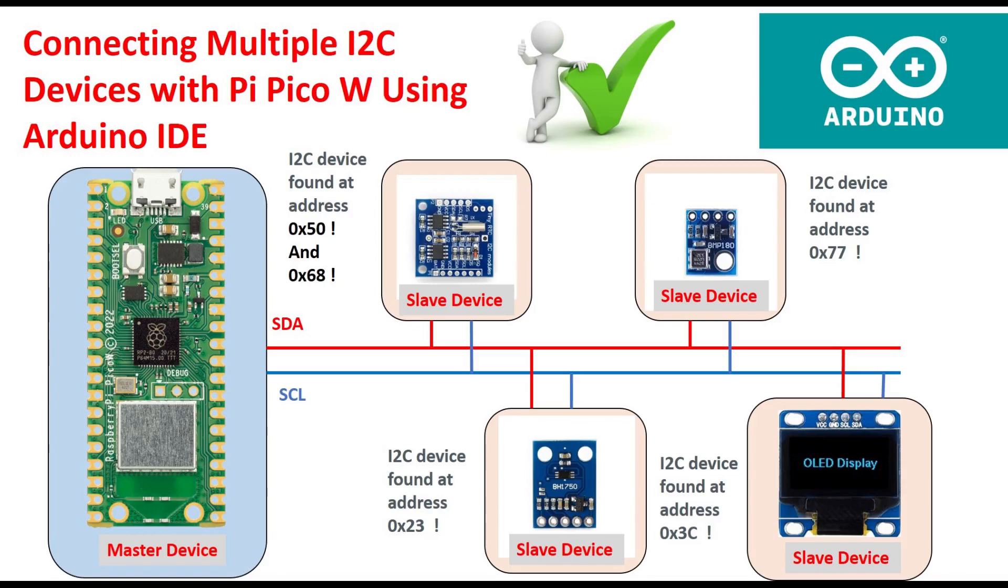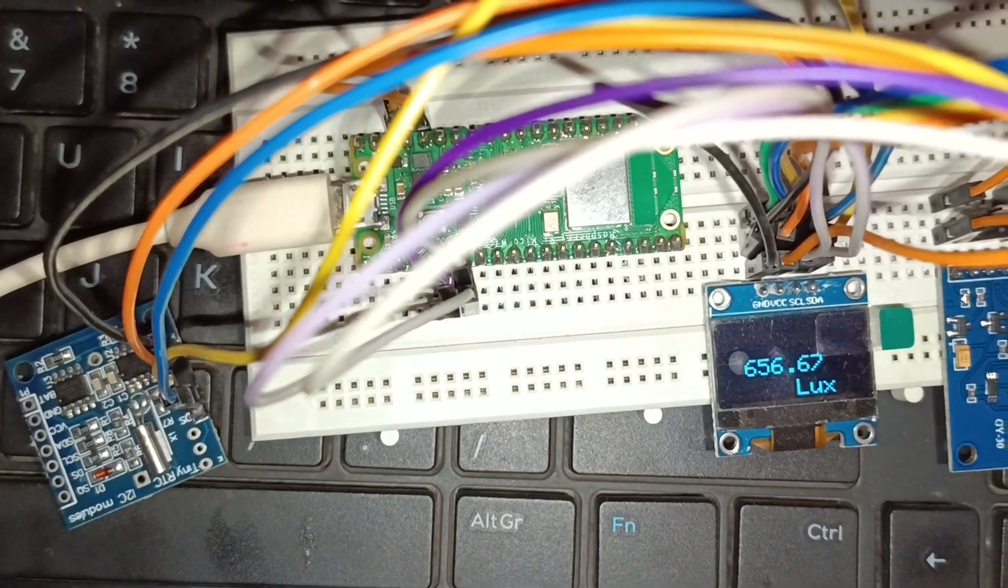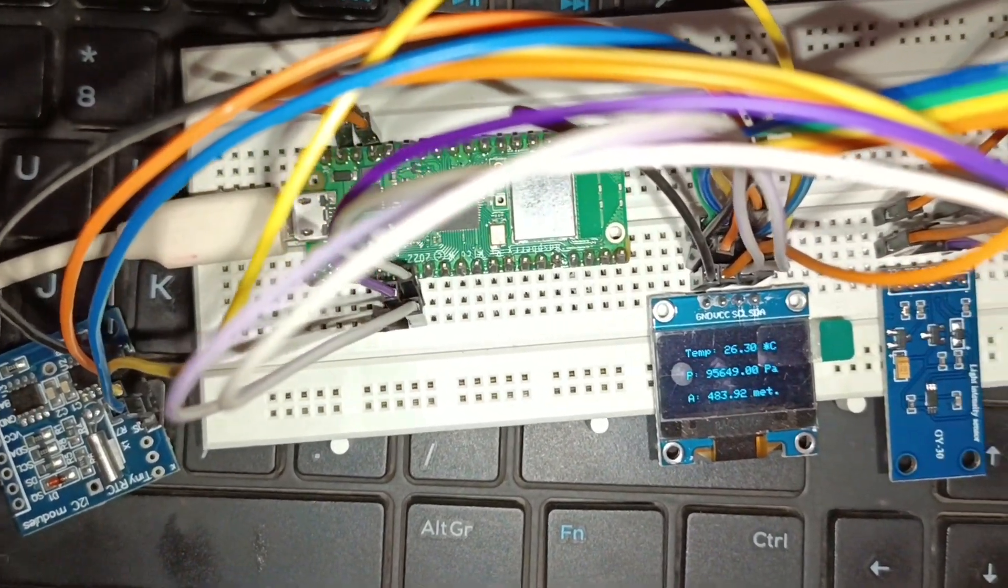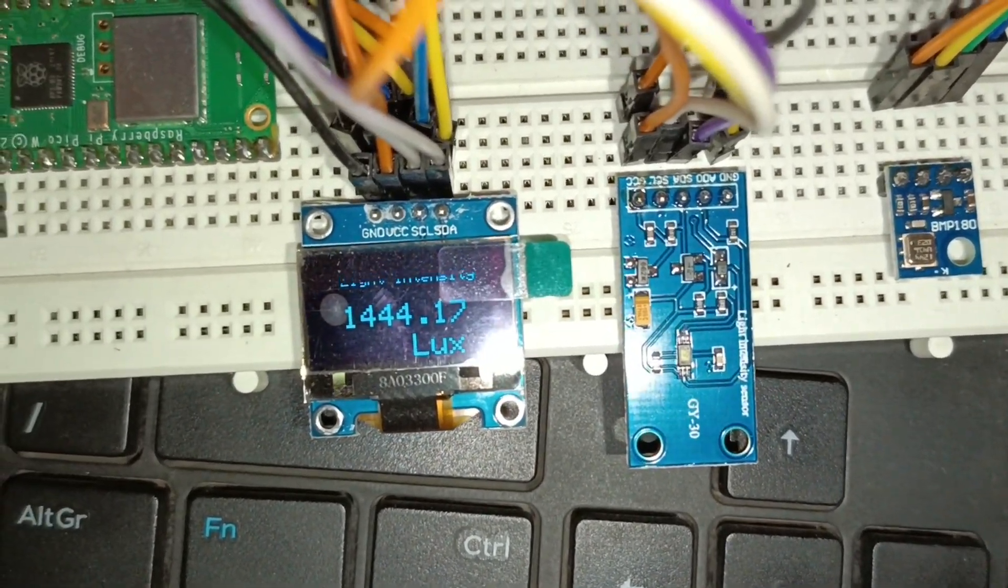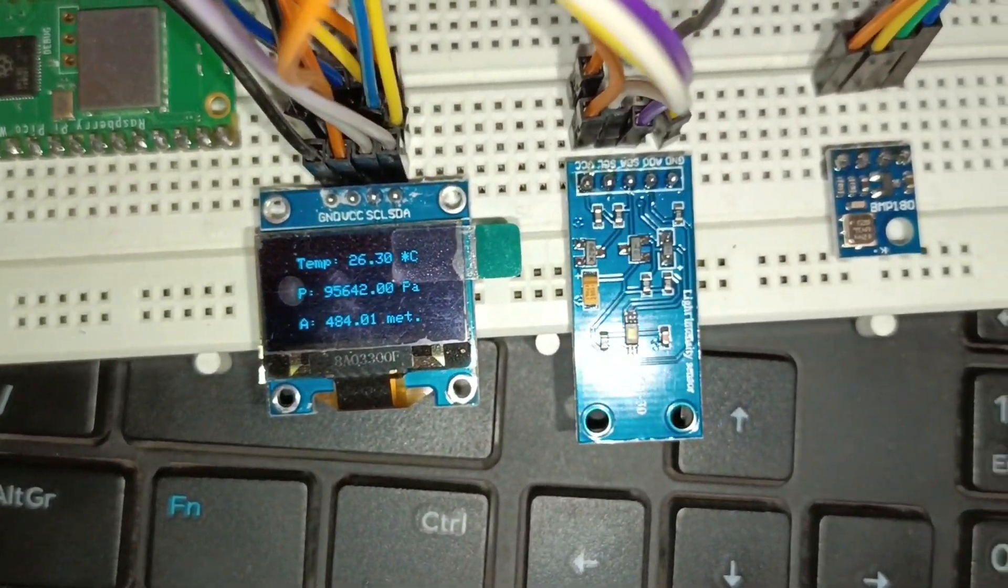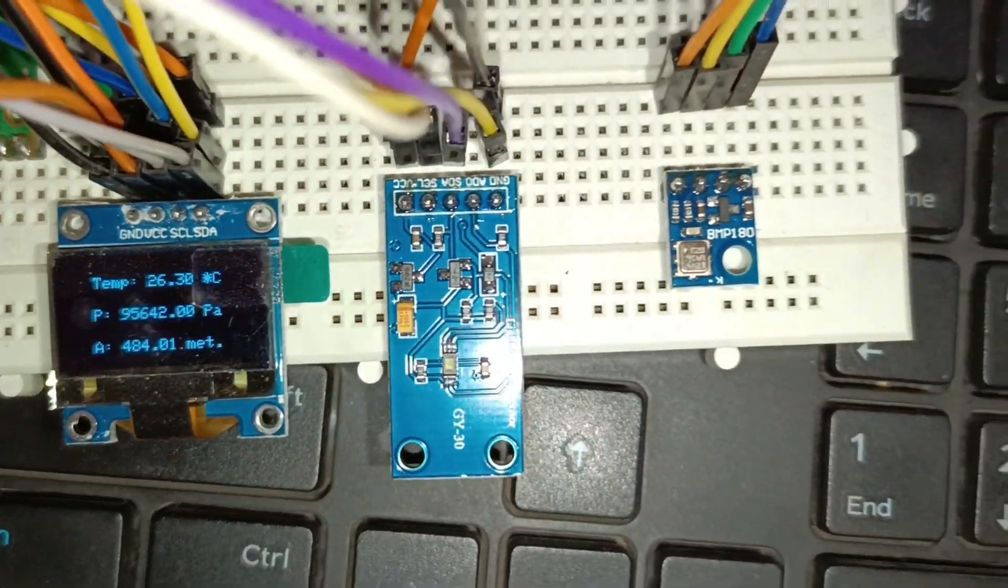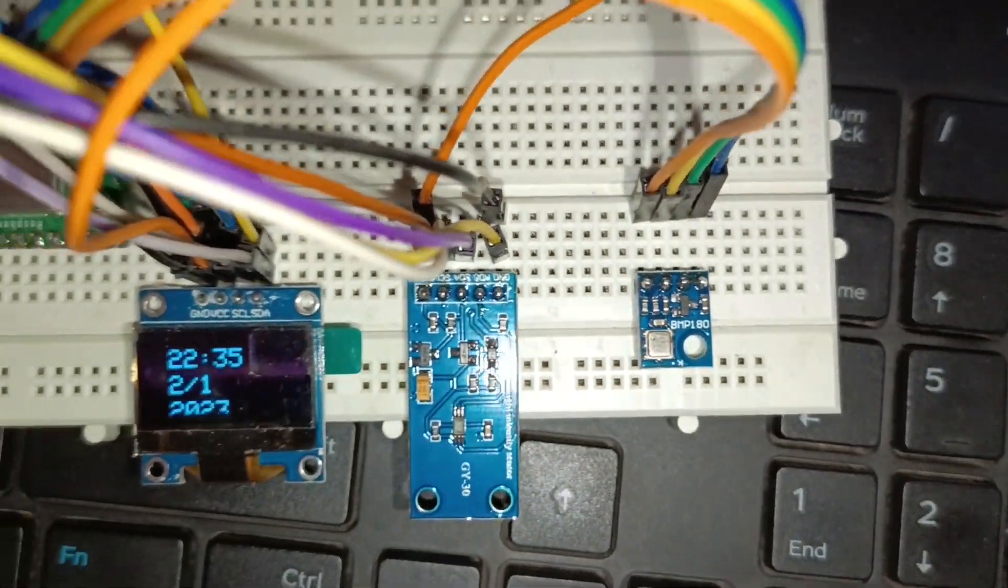Hello friends, welcome back to Prasad Tech. This video is based on interfacing of multiple I2C modules like DS1307 RTC, BH1750 Light Intensity, BMP180, and OLED module with Raspberry Pi Pico W.